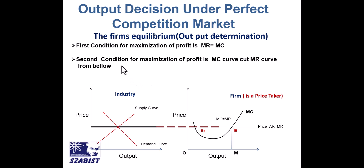But only at one point are we able to achieve the second condition. The second condition is that MC cuts MR from below. At the first point, MC is cutting MR from above, so it is decreasing at that point. At the second point, MC is cutting MR from below — so this is the point where we decide our output, and at this output level our profit is maximum.